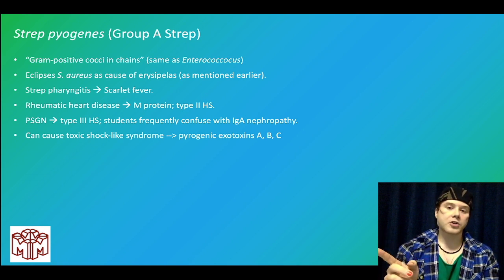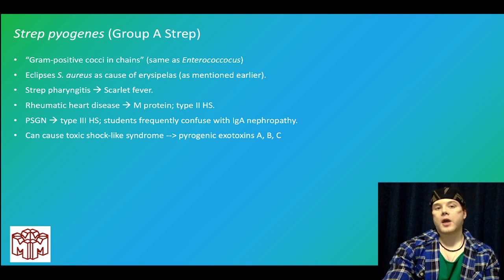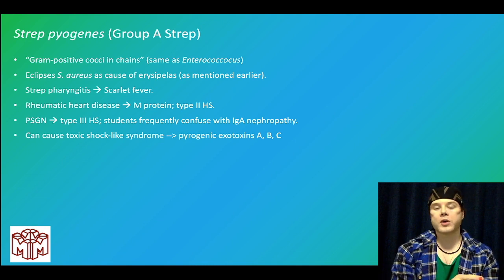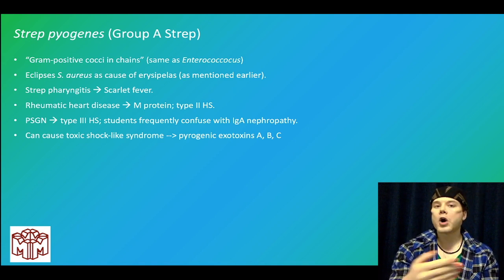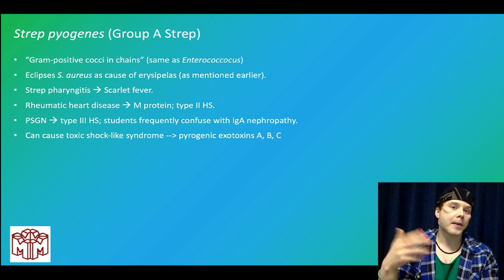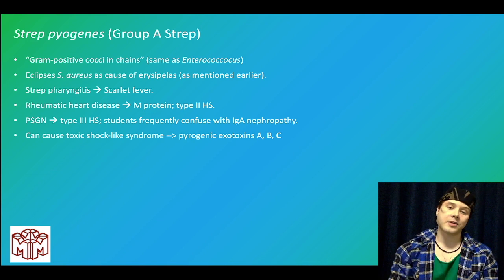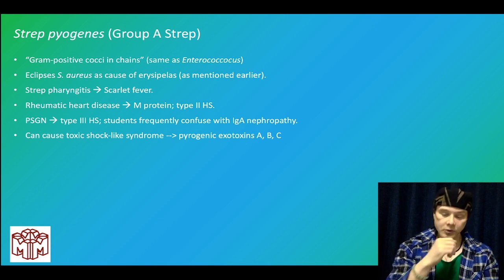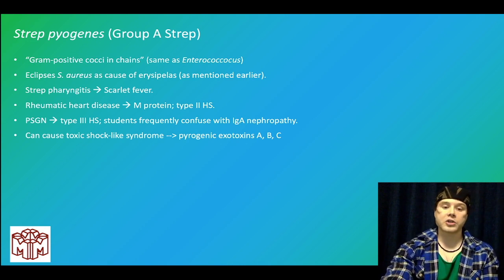Toxic shock syndrome comes from staph aureus with cotton packing or tampons, including nasal packing. But strep pharyngitis can also cause a toxic shock-like syndrome due to exotoxins A, B, and C. On USMLE, they may describe cellulitis with shock — you might think staph aureus, but if staph aureus isn't listed and blood cultures grow gram-positive cocci in chains, that's strep pyogenes causing toxic shock-like syndrome.